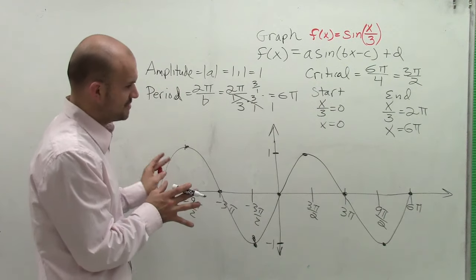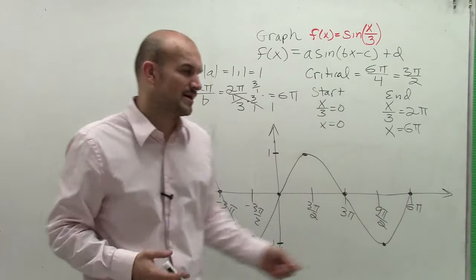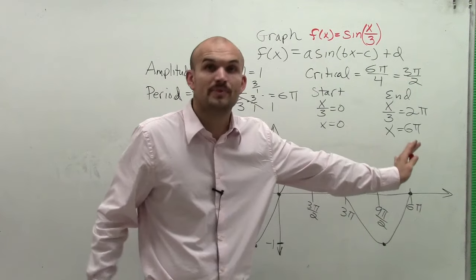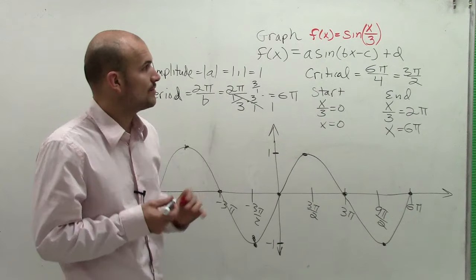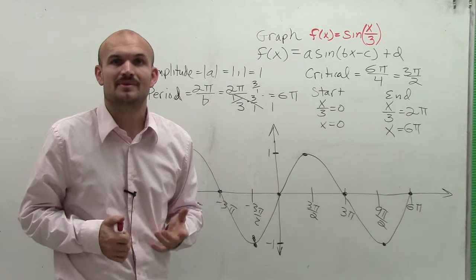So, and just remember, I'm just going to graph two full periods. That's usually the way we like to go with it. But you can continue going two full periods in the positive direction, or two full periods in the negative direction. But that's how you graph f of x equals sine of x divided by 3. Thanks.